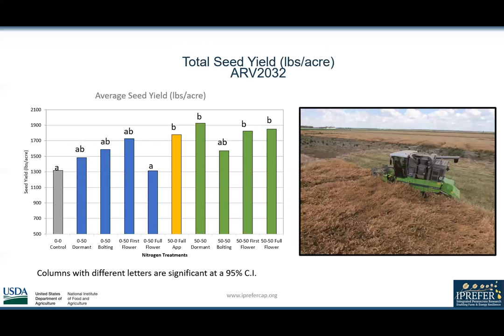The results for seed yield for ARV2032 showed several treatments which were significantly different to the control. Columns with different letters are significantly different to each other at a 95% confidence interval. None of the spring-only applications were significantly different to the control. The fall-only applications showed a significant increase in seed yield compared to the control, and all of the 50-50 treatments, with the exception of the 50-50 bolting treatment, were significantly different to the control.